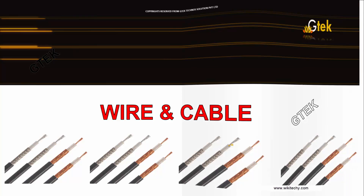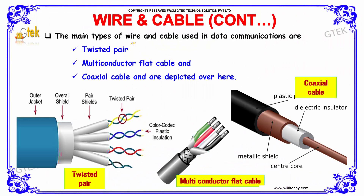The main types of wire and cable used in data communications are the twisted pair, multi-conductor wire, flat cables, and coaxial cables.